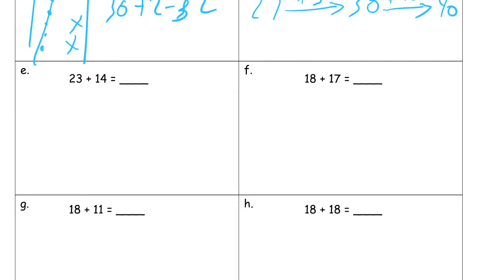And now looking at this one, just looking at the ones digits at 3 plus 4. So let's try 10 and 4. 23 plus 4 equals 27. And now add 10 more to the 27. 37.